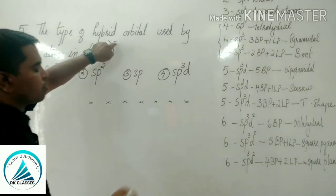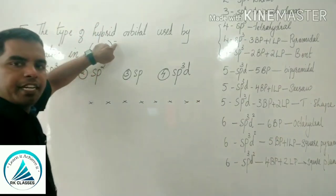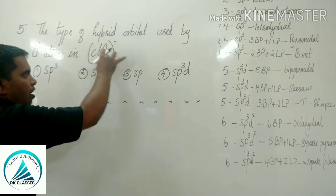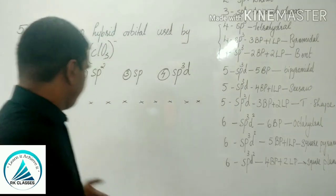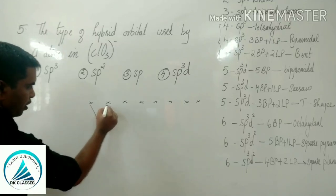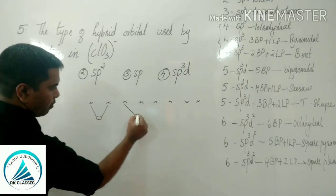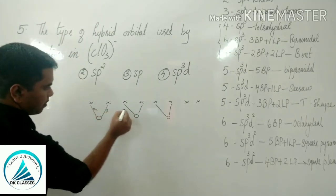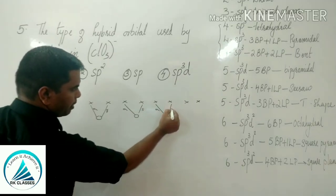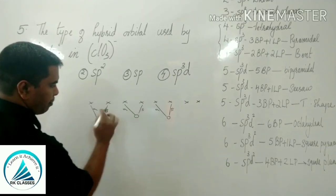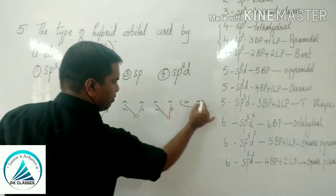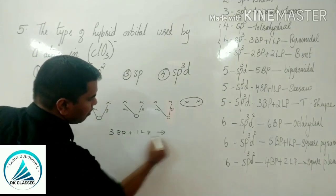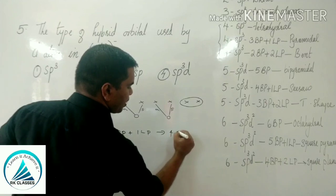ClO3 minus has a negative charge, so we add one more electron to chlorine — giving 8 electrons. Oxygen is bivalent, and there are 3 oxygen atoms. Each oxygen forms a sigma bond and a pi bond. Pi bonds are not counted, giving 3 bond pairs plus 1 lone pair — a total of 4 electron pairs.